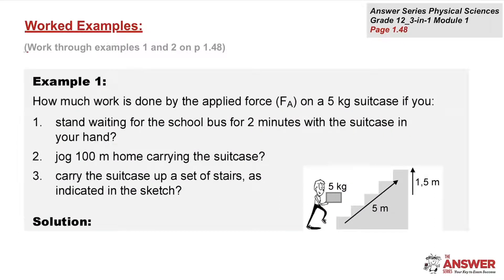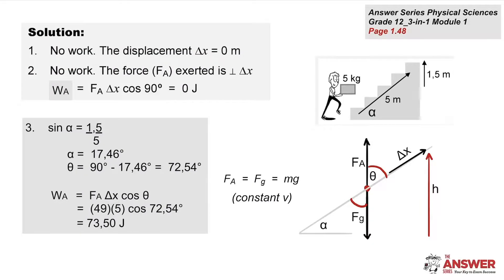In this first worked example, we've got a five kilogram suitcase being carried in three different situations. One is just standing waiting, the other is being carried horizontally, and in the third one up a flight of stairs. The force applied on that object is straight upwards. In that first situation there's no displacement and therefore no work is done. In the second one, the applied force is perpendicular to delta x, and so therefore the work done equals zero because cos 90 is equal to zero.